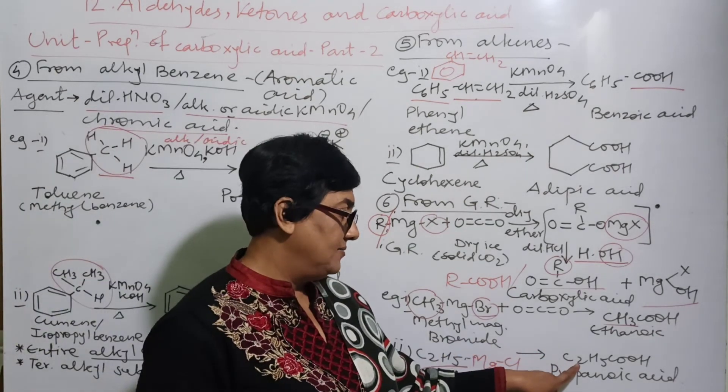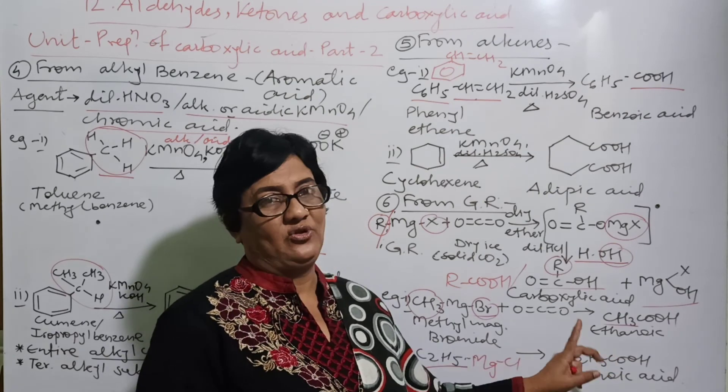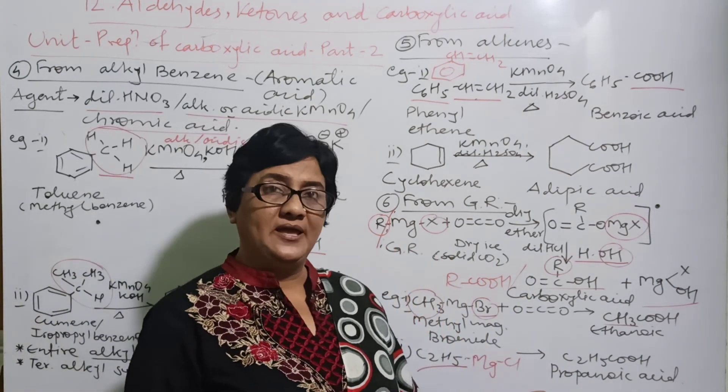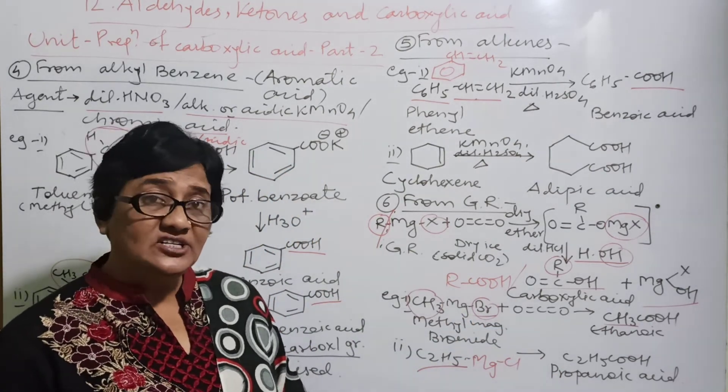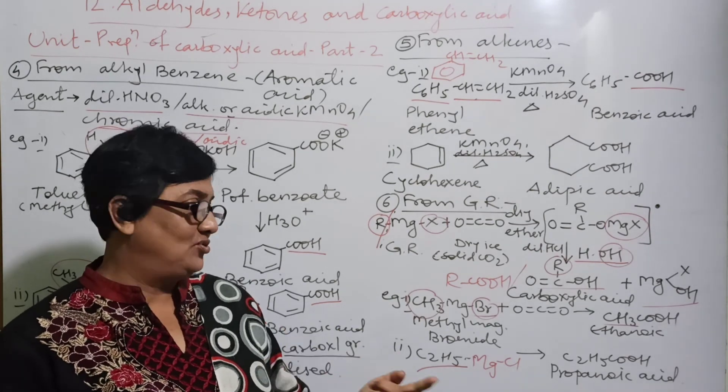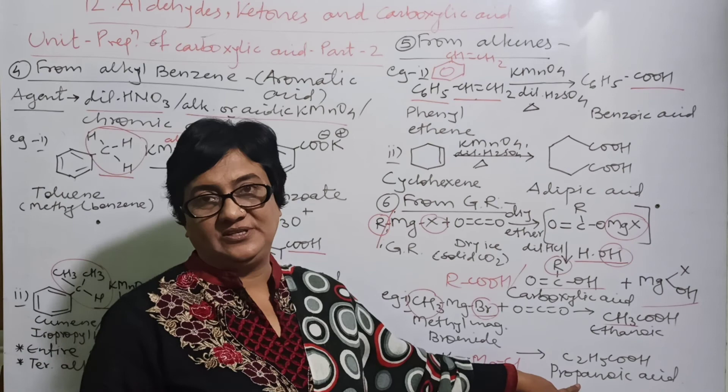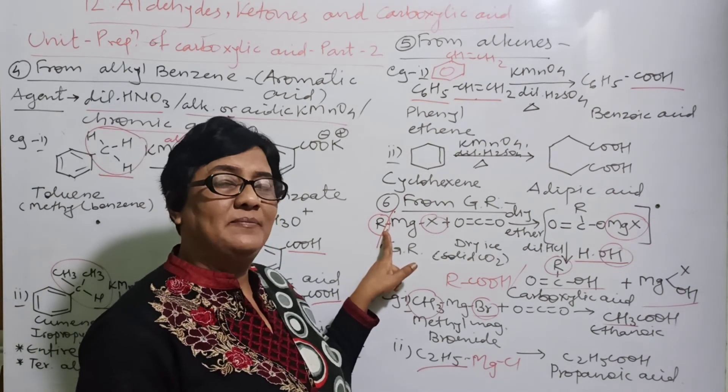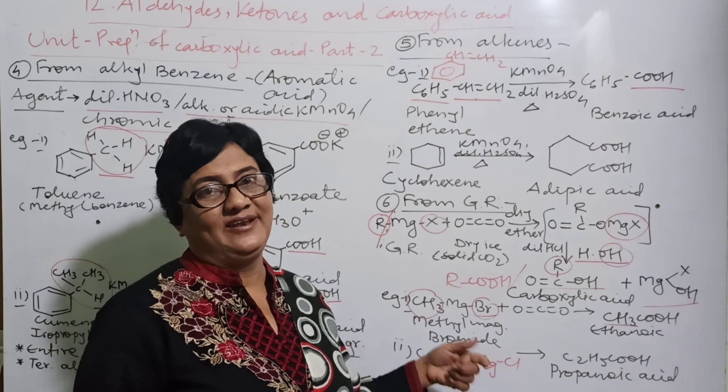So finally R group having which group? C2H5. So C2H5-COOH means propanoic acid. Means in examination if the question is asked how will you prepare propanoic acid by using Grignard reagent and solid carbon dioxide or dry ice, then you have to decide if propanoic acid is to be prepared, means ethyl group is to be taken here in place of R. How you can remember such type of reaction? If you write the example, then and then only you can recall.